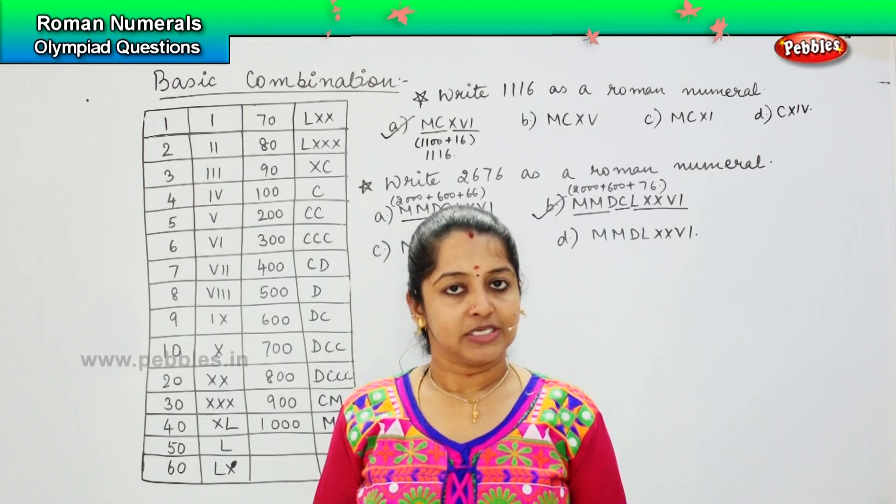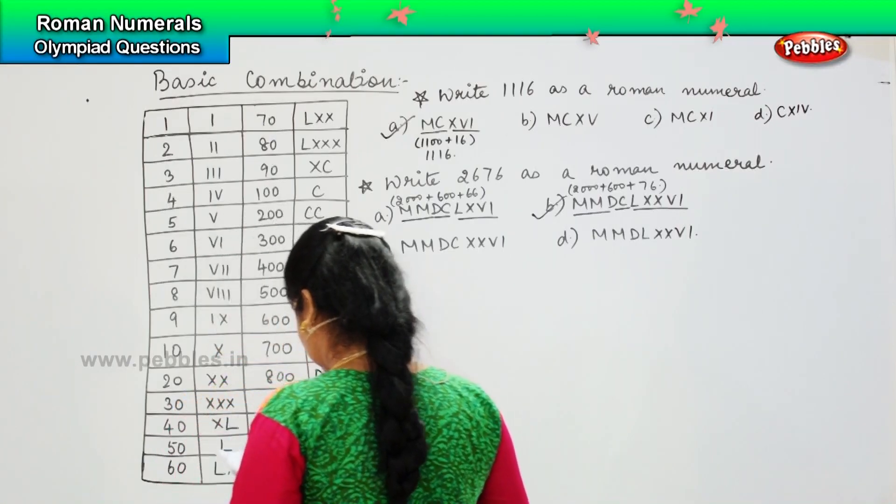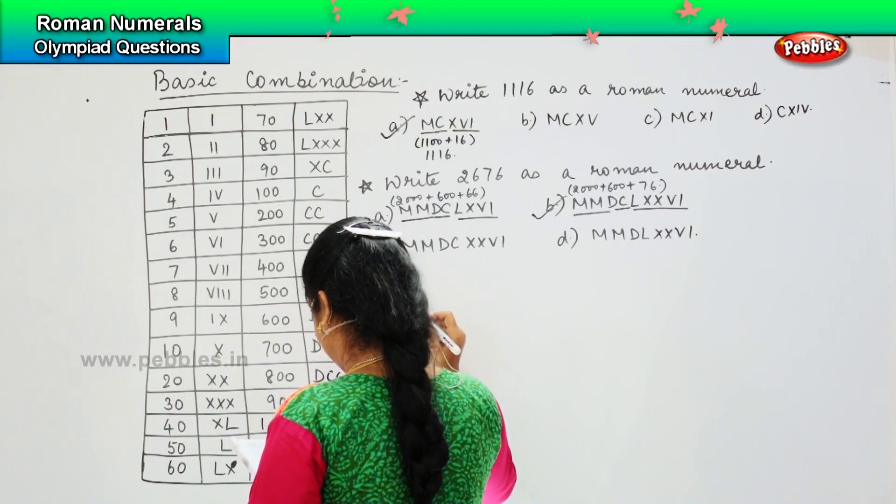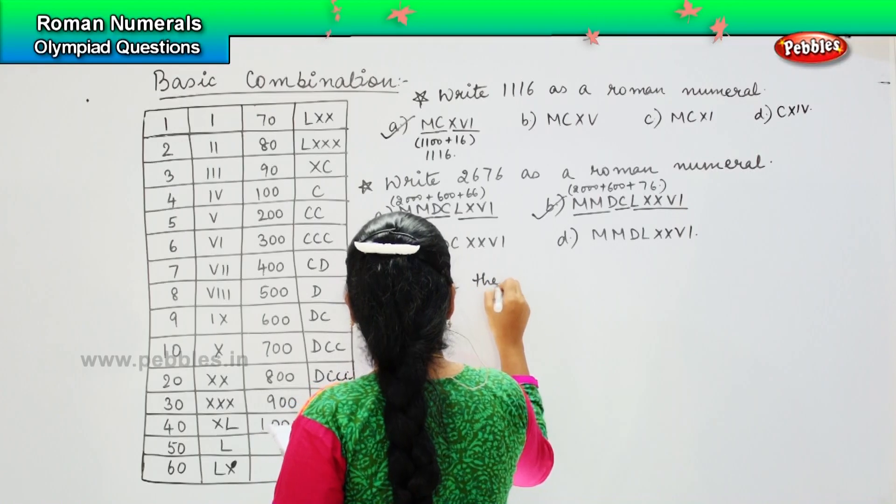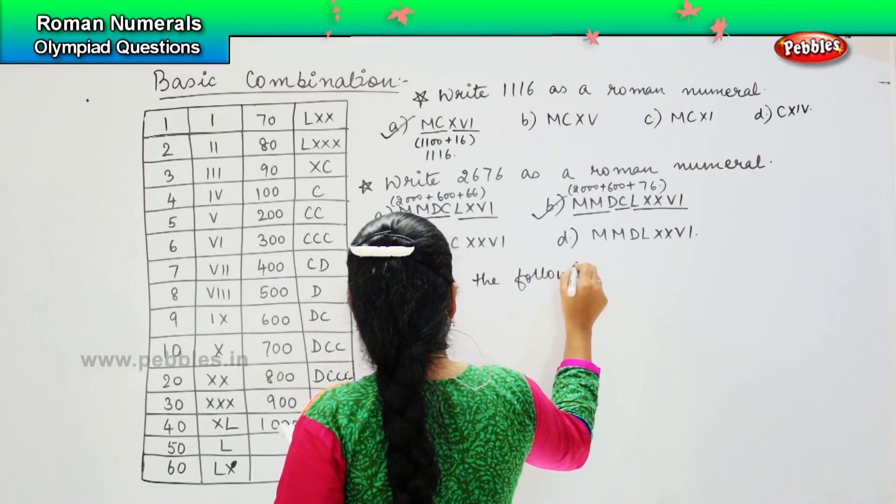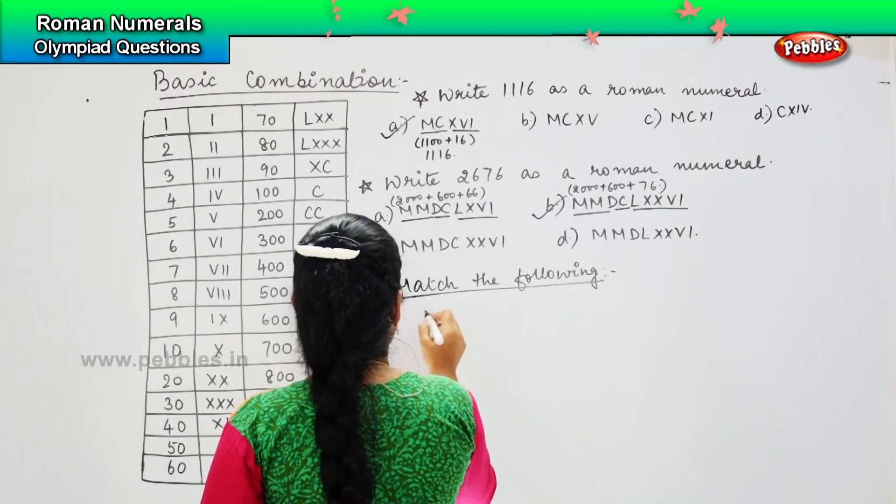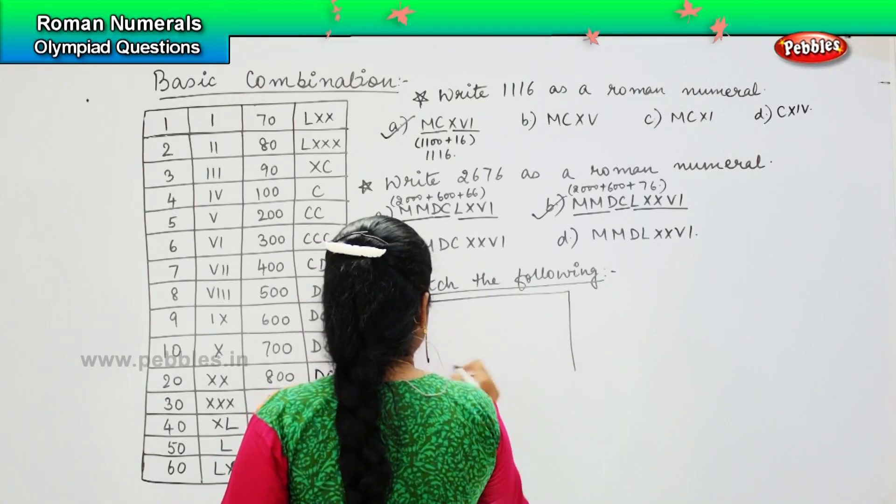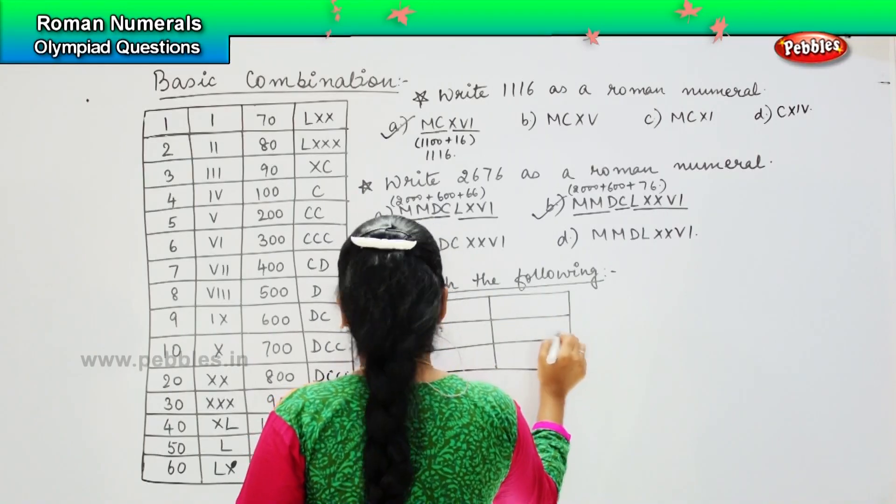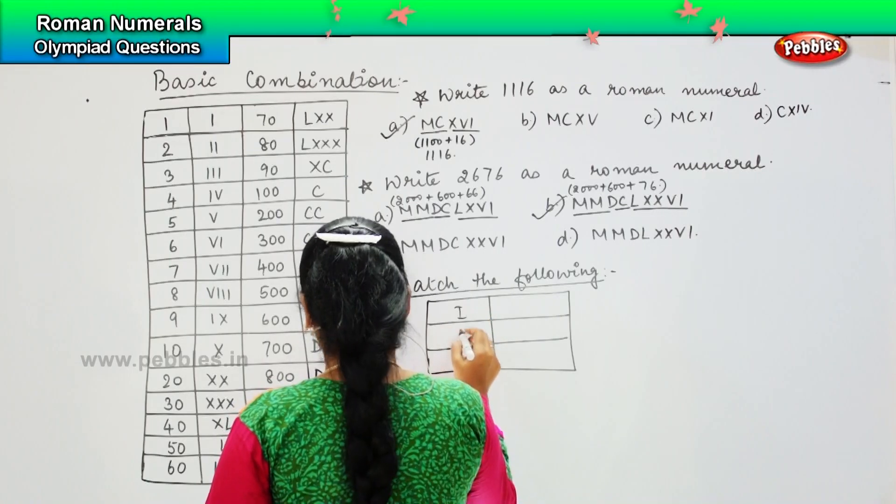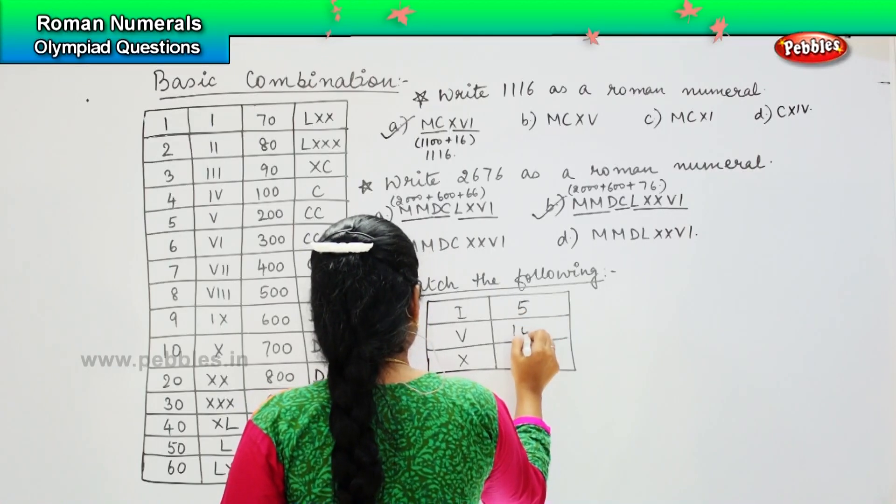Shall we do further? Okay, so here is your next question. The question asks: match the following. So here it is - I, V, X, and here it is 5, 10, 1.